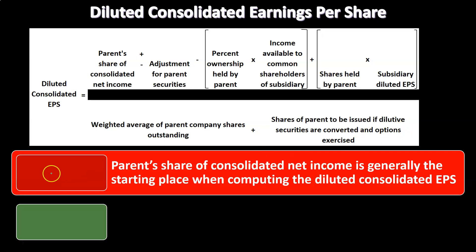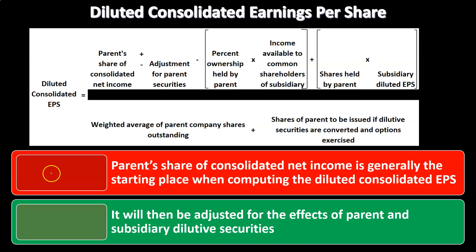Generally, we'll start with the parent's share of the consolidated net income — that's the starting point when computing the diluted earnings per share. It will then be adjusted for the effects of parent and subsidiary dilutive securities. So from a top-to-bottom calculation, we start with the parent's share of consolidated net income and then work through the adjustments for the effects of parent and subsidiary dilutive securities in a systematic, step-by-step way.